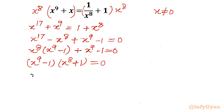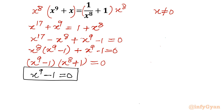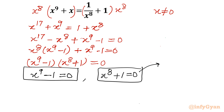The given equation is now converted into the product of two brackets. Equation 1 will give us 9 solutions and equation 2 will give us 8 solutions. Using complex numbers and simple algebraic identities, this will be very easy to solve.